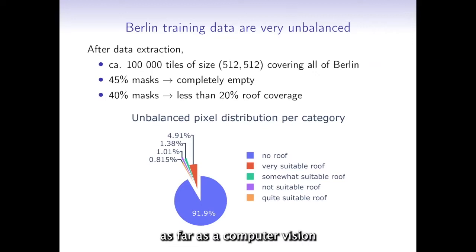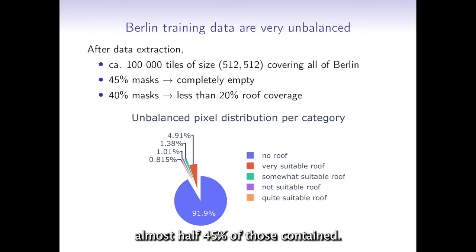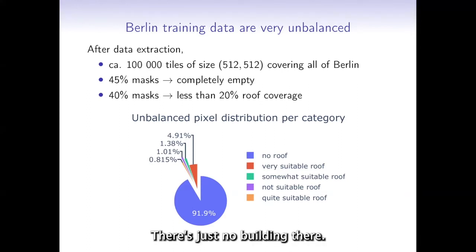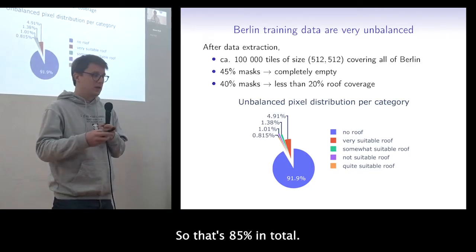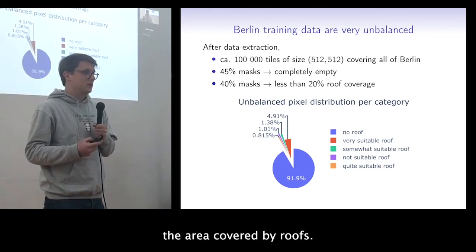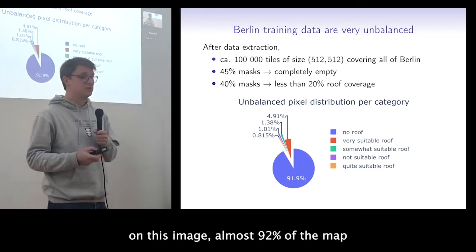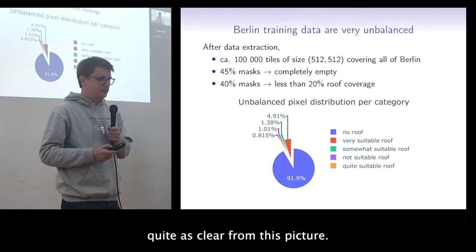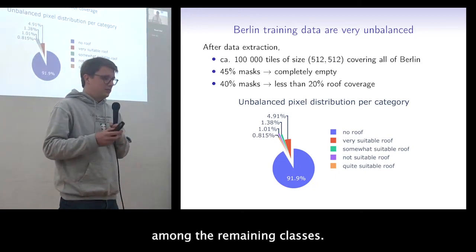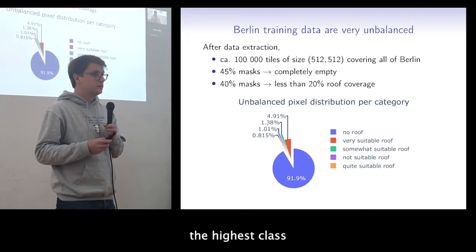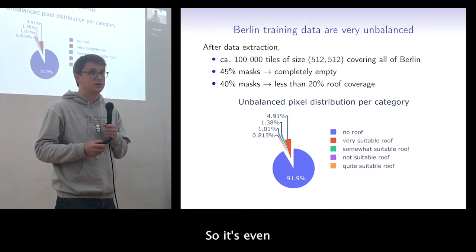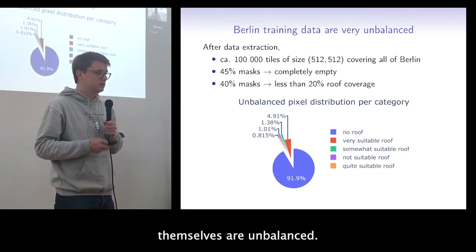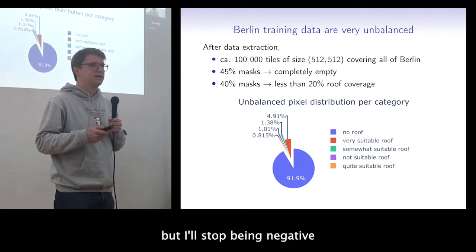It gets worse: most of the map is empty from a model's perspective. Out of almost 100,000 tiles, 45% contain no buildings — just forests, lakes, or parks. Another 40% have just a few roofs covering less than 20% of the area. So almost 92% of the map contains no usable roof data. Among the remaining classes, the highest category is four times as frequent as the next, making the classes themselves heavily imbalanced.